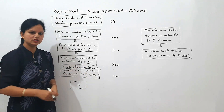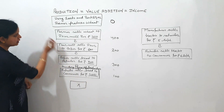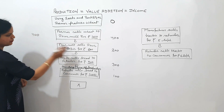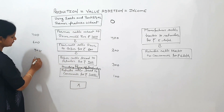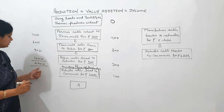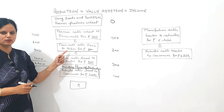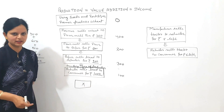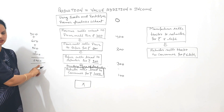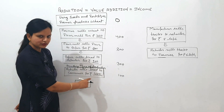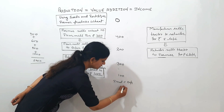If we ignore the point that the good is intermediate till it reaches the final user, certain goods will be counted more than once. If we add 400 + 600 + 900 + 1000, the value becomes ₹2900. In this value, wheat is counted four times, services of the flour mill three times, and services of the baker two times. This is the problem of double counting. So final consumption expenditure in the economy is ₹1000.